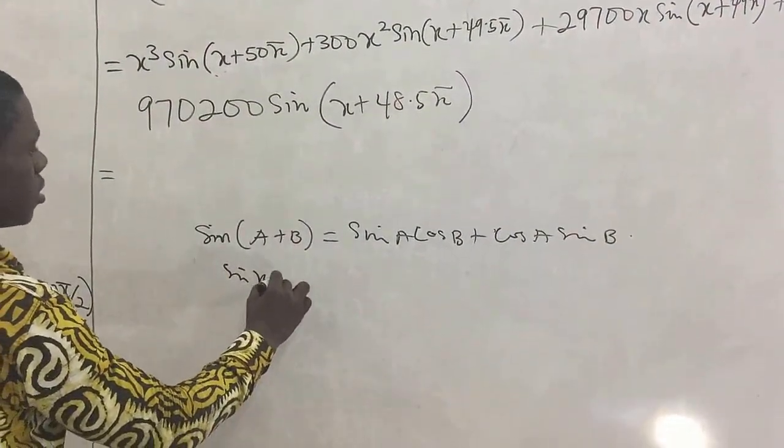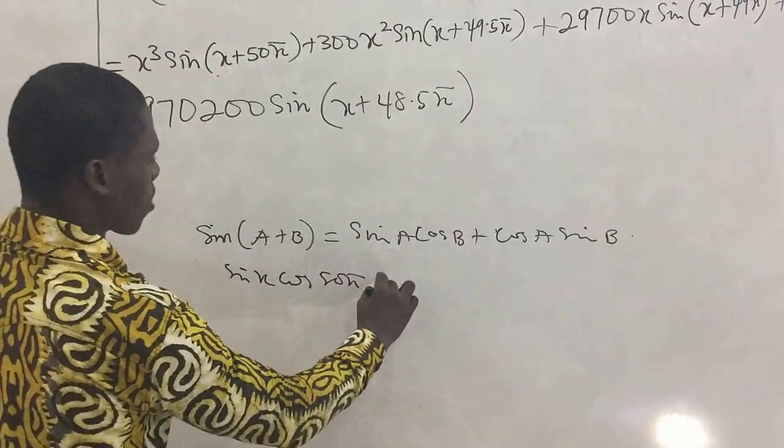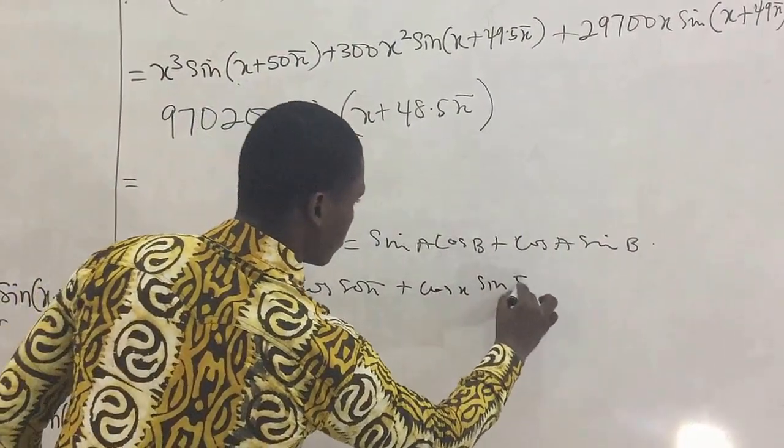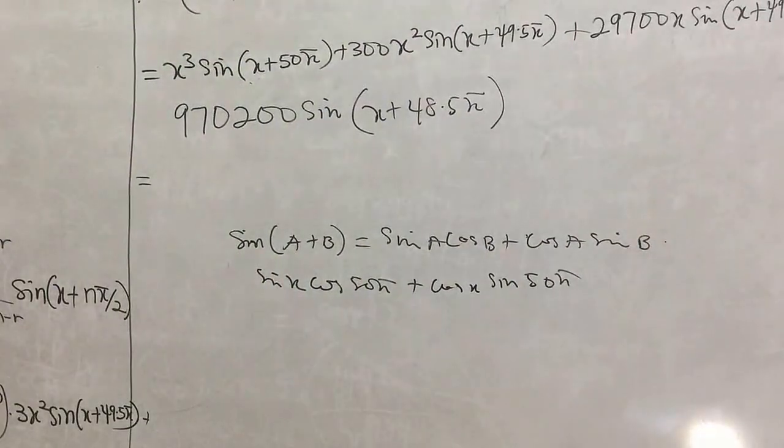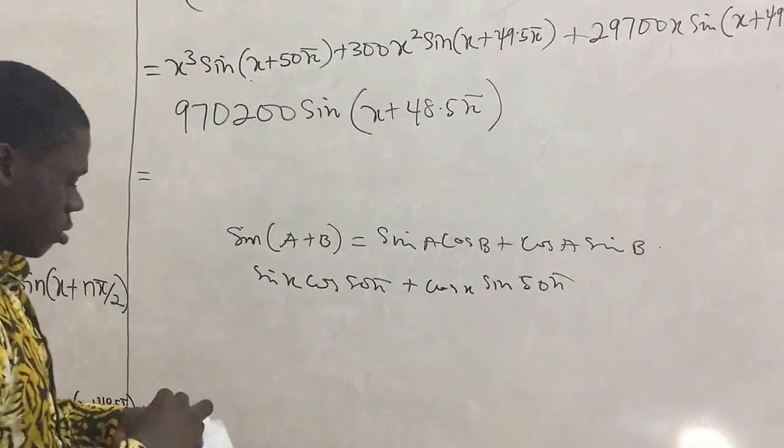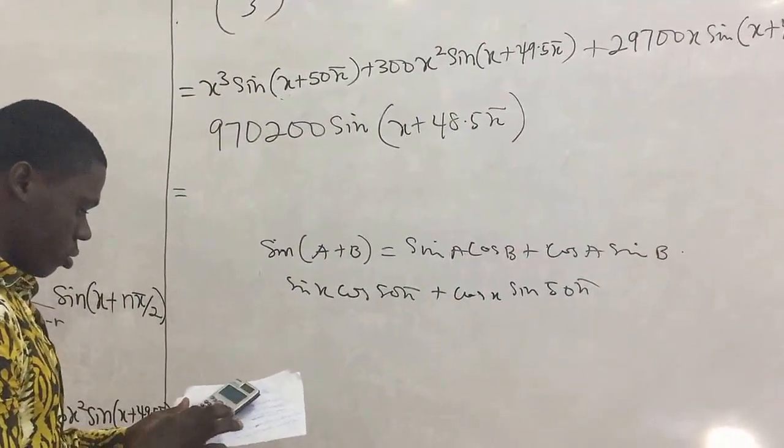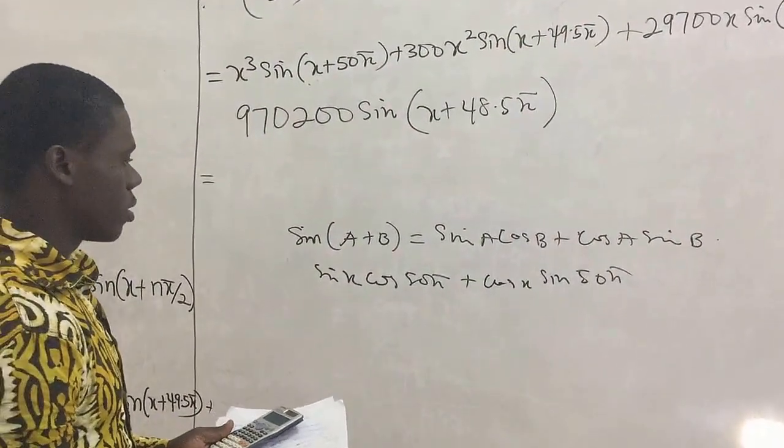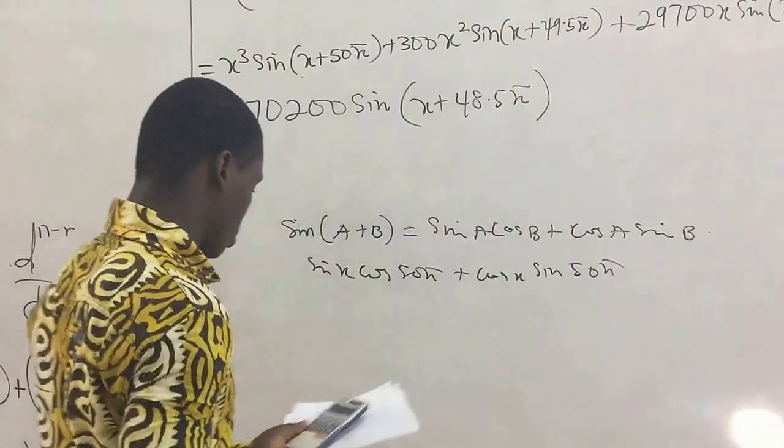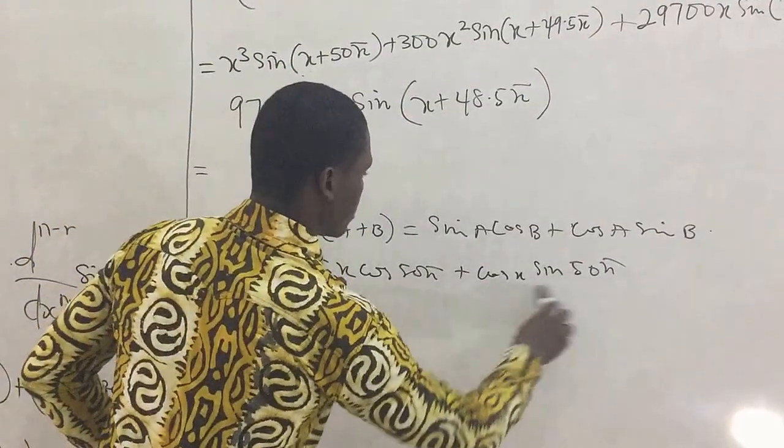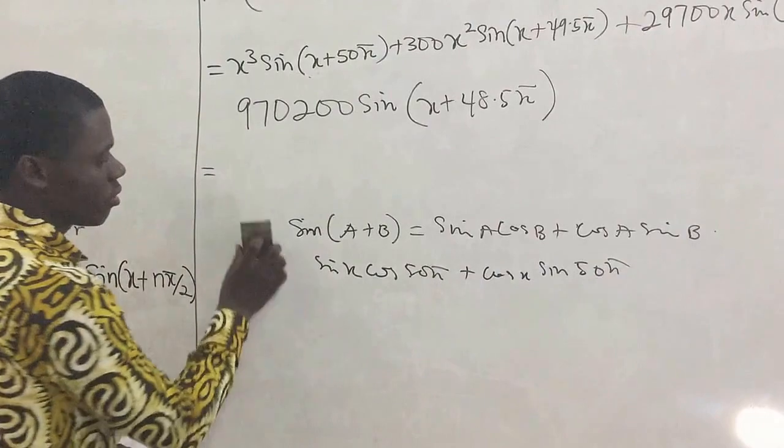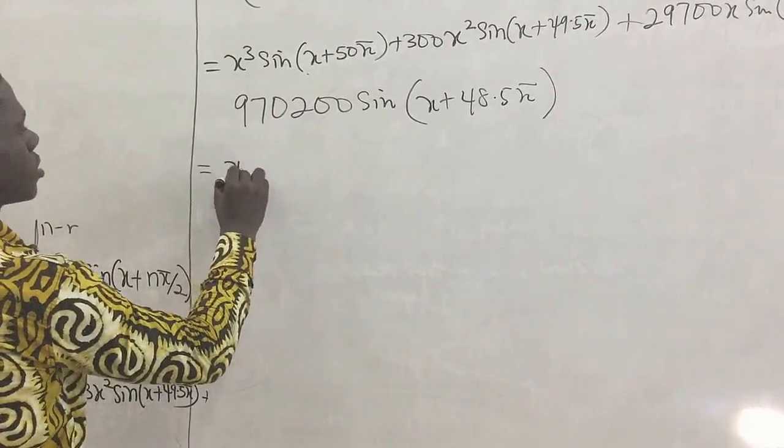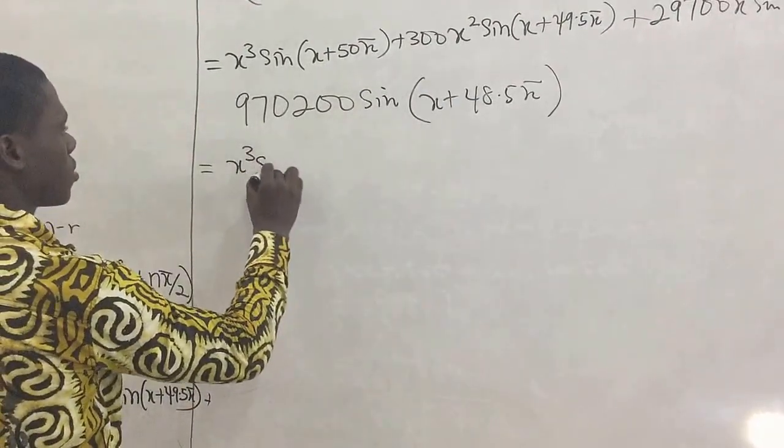So it's going to give us sine x, then cos 50 pi, plus we're going to have cos x sine 50 pi. So we'll try and then see what happens. We'll punch cos 50 pi, so cos 50 pi is giving us 1, and sine 50 pi is giving us 0. So it means that this aspect, all this becomes 0. This is 1, so we have sine x. So we have sine left here. So it means that when we come here, we're going to have x cubed, everything here becomes sine x.